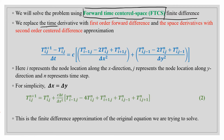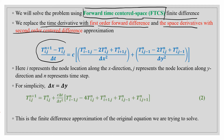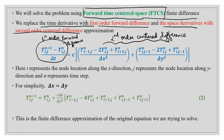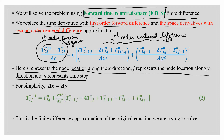In the FTCS scheme, we replace the time derivative with a first-order forward difference and the space derivative with a second-order central difference approximation. Here, i represents the node location in the x-direction, j represents the node location in the y-direction, and n represents the time step. n+1 is the forward time and n is the current time.